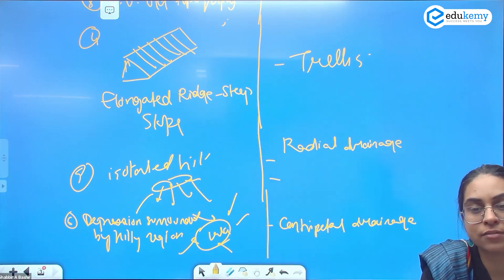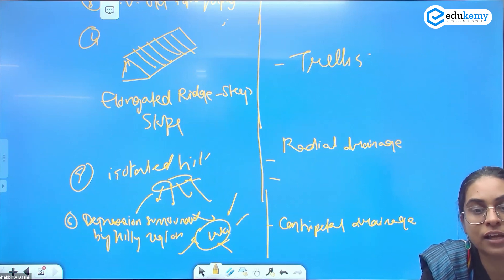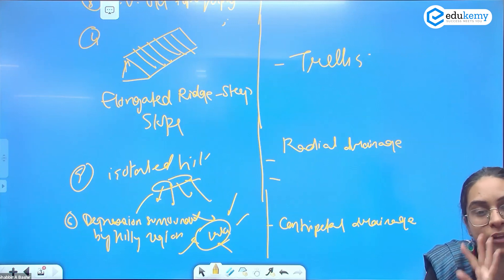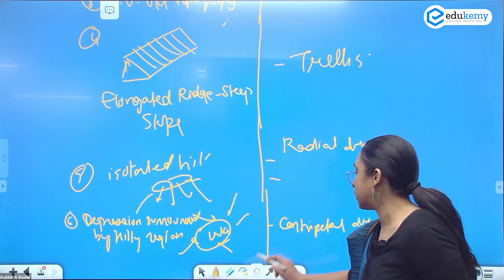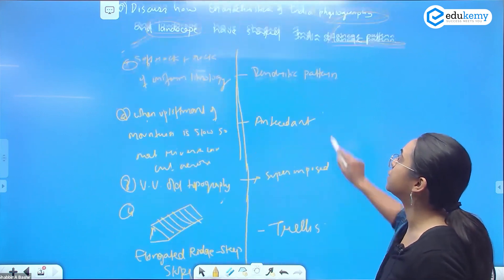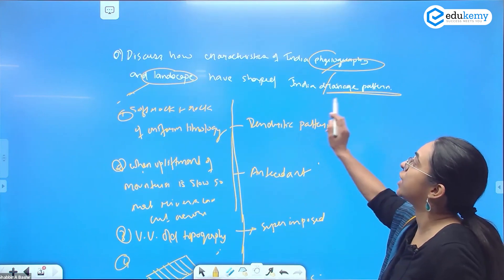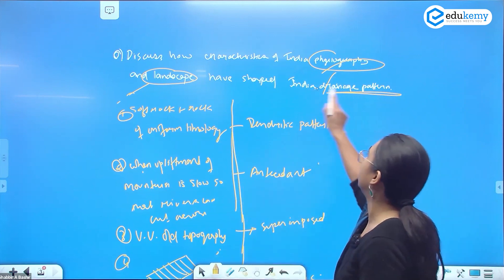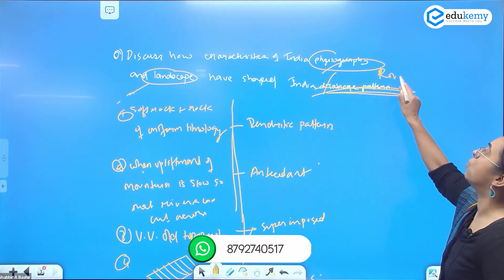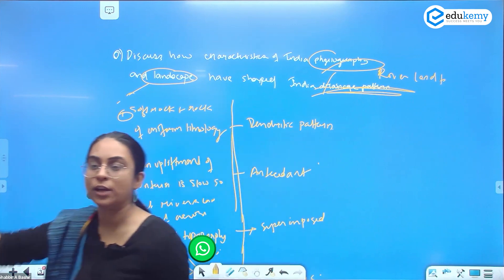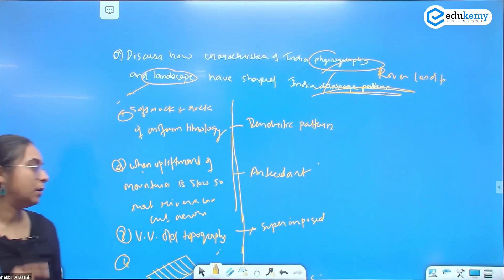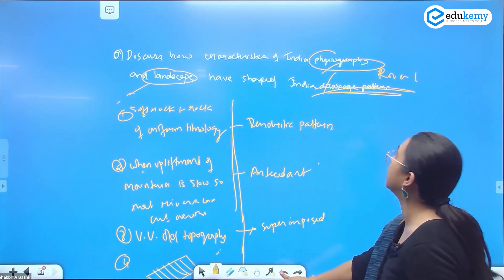The question is how drainage patterns are shaped by Indian physiography. Features of a river include delta and estuary, but those are river landforms. If the question asked how Indian physiography shaped various river landforms, then you would include estuary, delta, gorge, canyon. But the question specifically asks about drainage pattern — that particular word. So distinguish: drainage pattern versus river landforms.